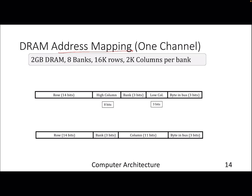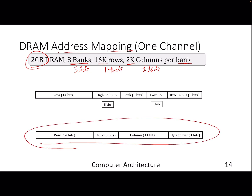This example uses a 2 gigabyte DRAM with 8 banks, 16,000 rows, and 2,000 columns per bank. To find a particular row you need 14 bits; for 8 banks you need 3 bits; for 2K columns you need 11 bits. In a straightforward address mapping, the lower 3 bits are ignored because we always send 8 bytes at minimum. After that, column bits, then bank bits, then row bits are stored in order.